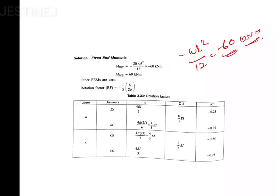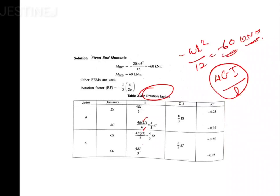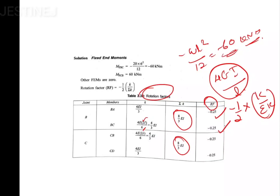Coming to the rotation factor: all far ends are fixed, so you can use the equation EI by L. Note that 2I applies for BC and CB. After computing K by sigma-K, the rotation factor equation is minus 1/2 multiplied by K by sigma-K. You will get minus 0.25 for BA, minus 0.25 for BC, minus 0.25 for CB, and minus 0.25 for CD.